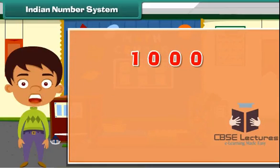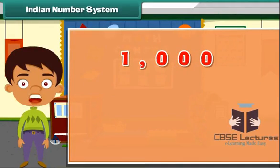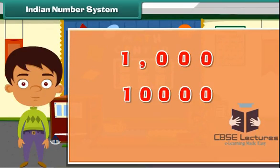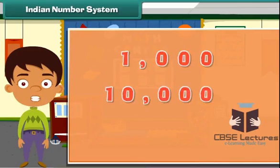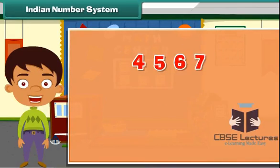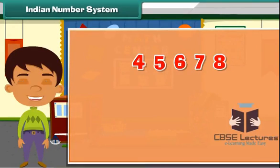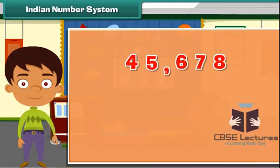One thousand is written as one comma zero zero zero. Ten thousand is written as ten comma zero zero zero. Now consider the number 45678. The Indian number system will group it as forty-five comma six seven eight. The number is read as forty-five thousand six hundred seventy-eight.